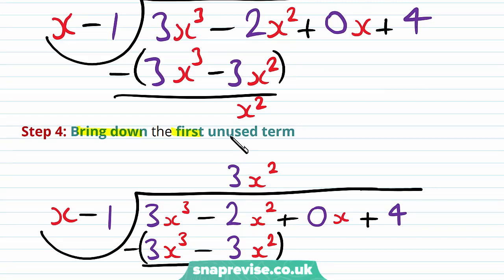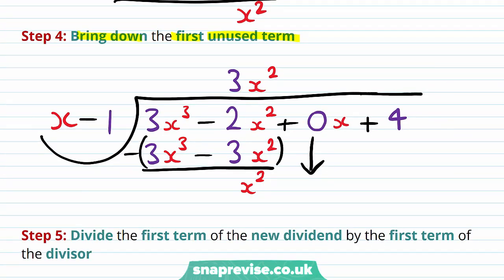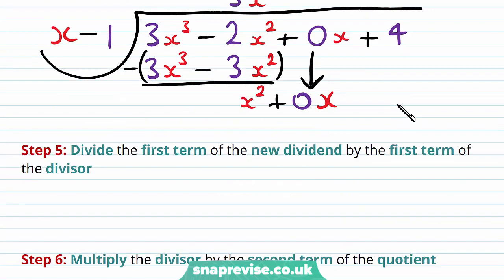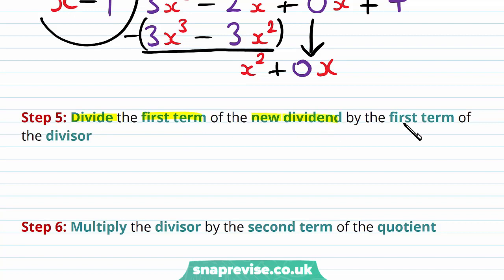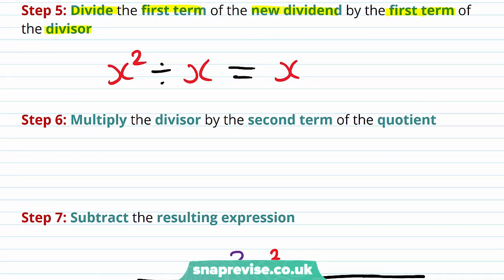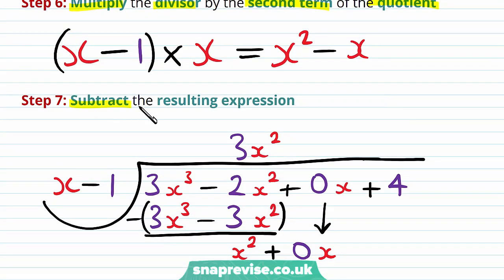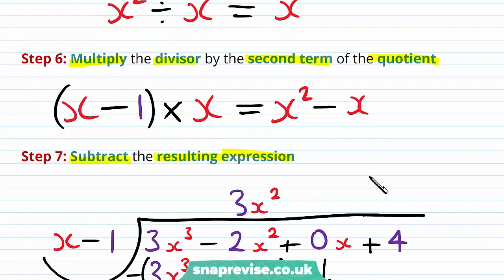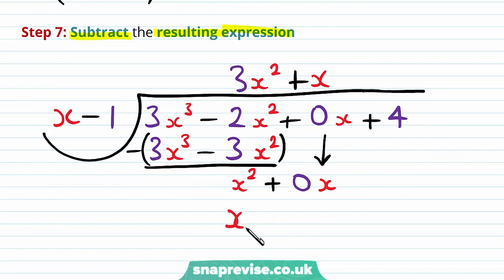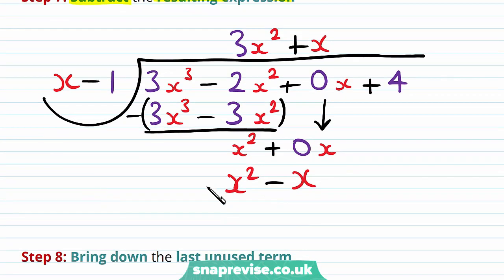Our fourth step is to bring down the +0x placeholder. Our fifth step is to divide x² by x, giving us x. Our sixth step is to multiply the divisor x − 1 by x, giving us x² − x. Our seventh step is to subtract: this gives us just x.